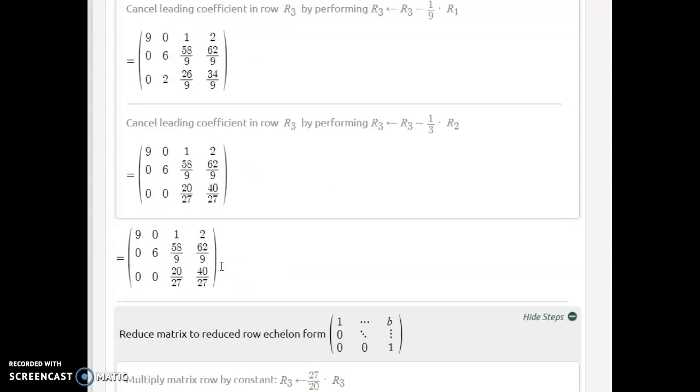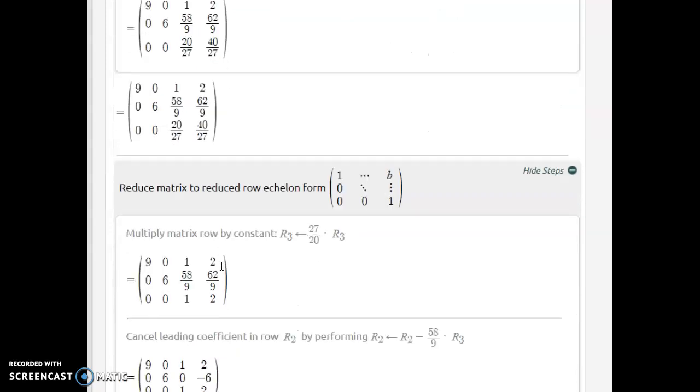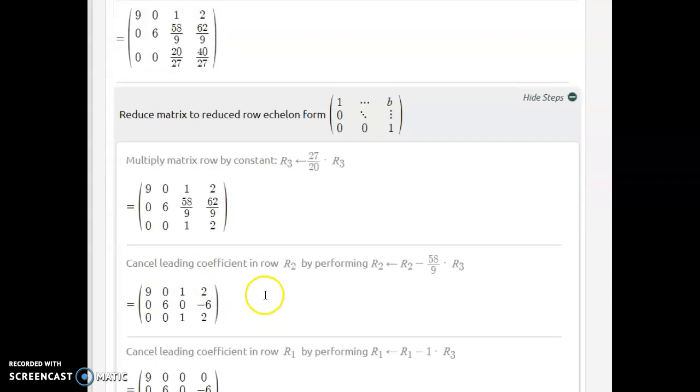Technically what I would do now is I would just multiply the whole thing by 27 to get rid of these fractions. It actually just does the last row, you see that times 27 which is gonna give us here 20 and here it's gonna give us 40. Then we can divide by 20 so one and two. Then it multiplies the second row here by nine.